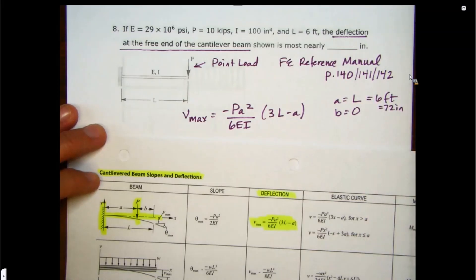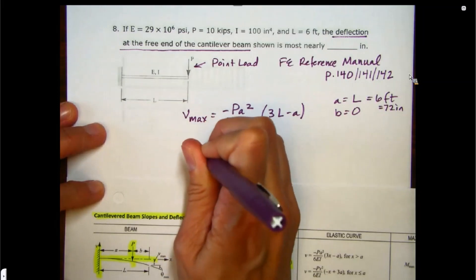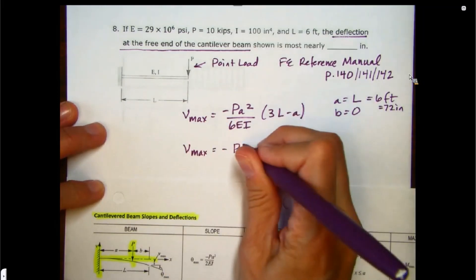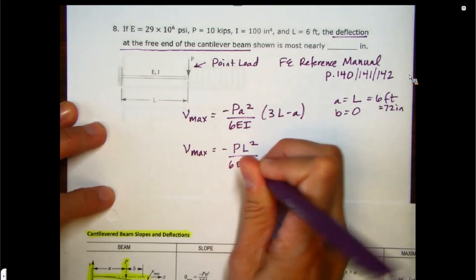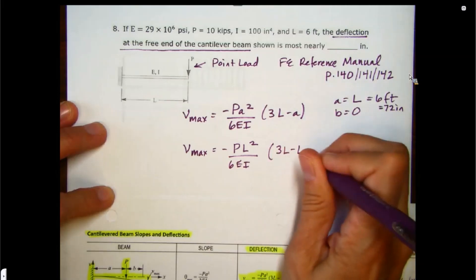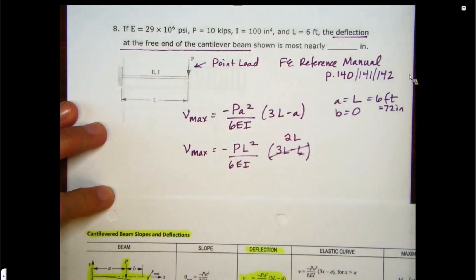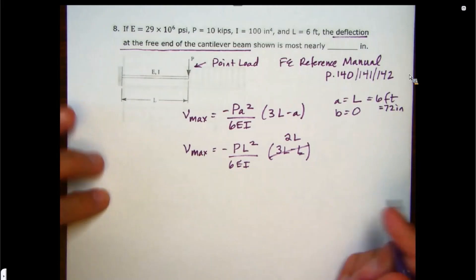And now it's just plugging our stuff in here. So for our Vmax, we're going to have minus that A is L. So it's PL squared over 6EI times 3L minus L. So that's really just 2L.